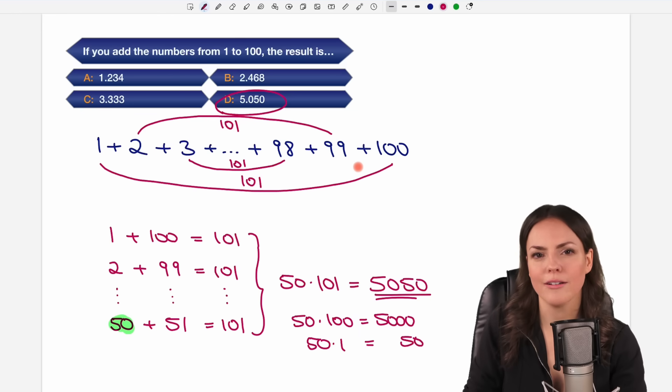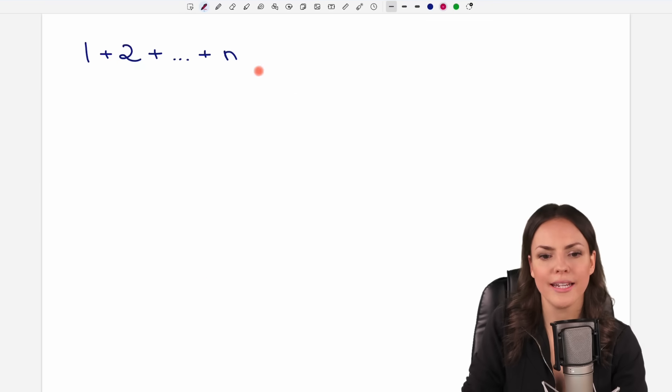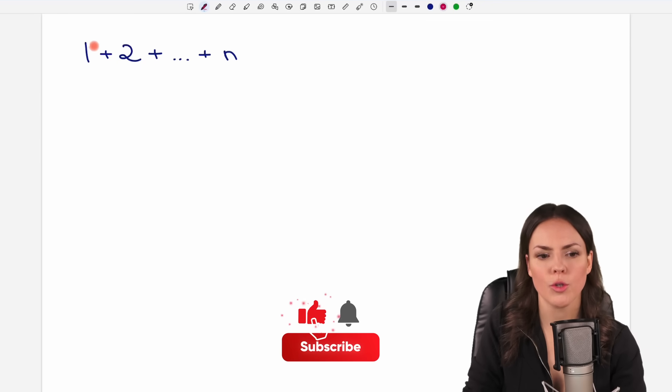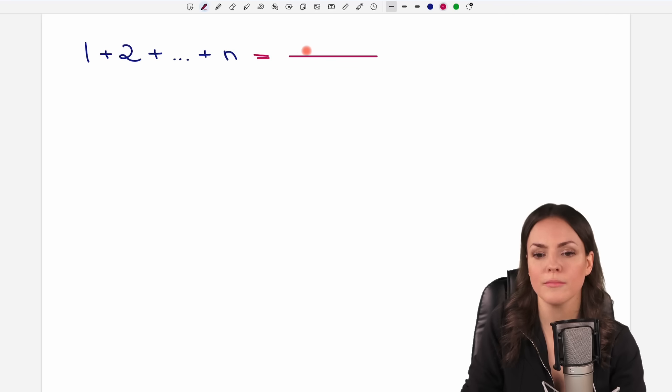He wanted to have a general rule for adding the first N positive integers. So if you add 1, 2, 3 till a natural number N, he came up with a formula that is also called the little Gauss formula.